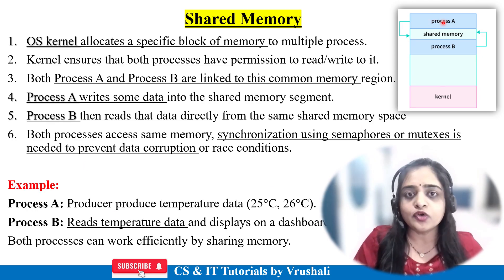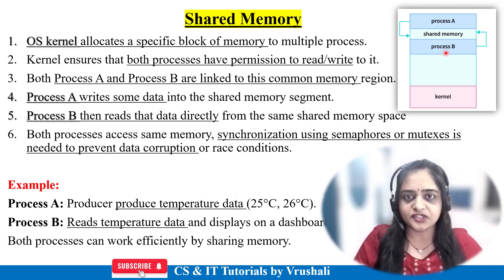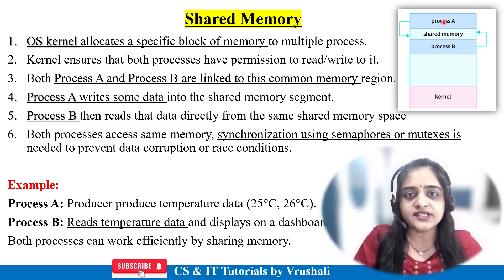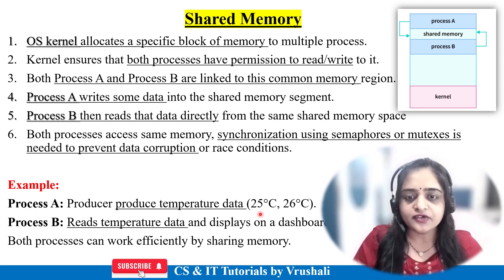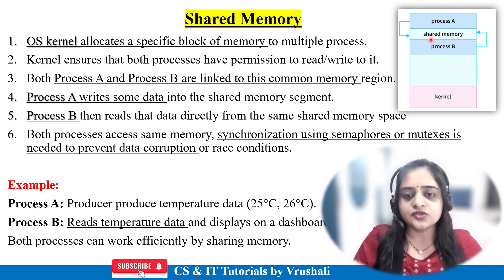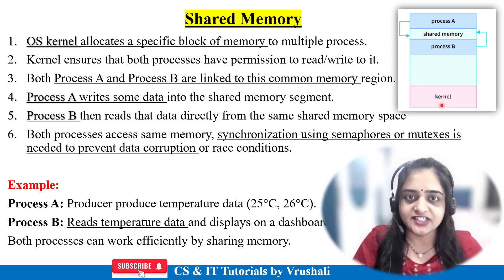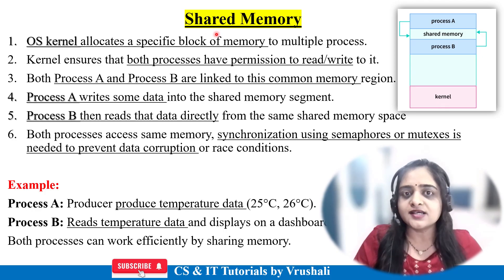Now let's understand shared memory with an example. Assume Process A is the producer and Process B is the consumer — we already discussed the producer-consumer concept in our previous session. Process A produces temperature data, for example 25 or 26 degrees Celsius. Process B is the consumer that reads this data and displays it on a dashboard using the same shared memory. The kernel allocates the memory and after that does not interfere further. This is the concept of shared memory.